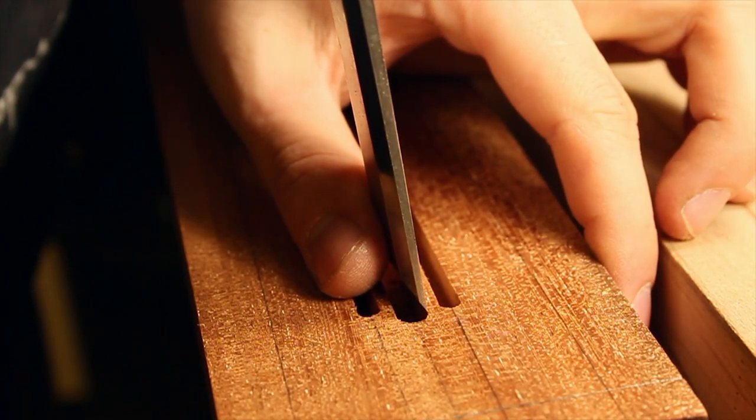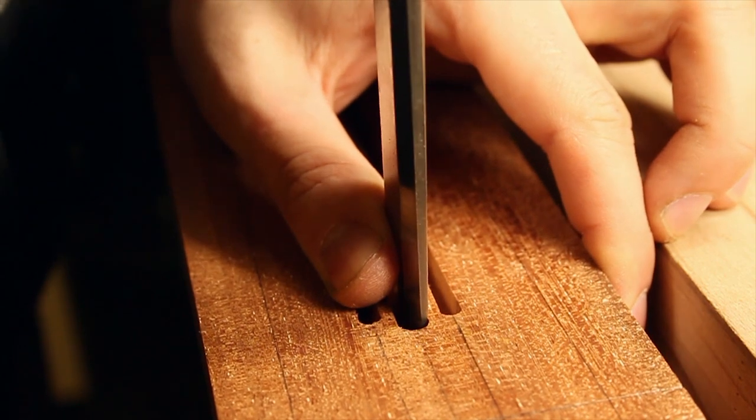The router leaves the slots rounded at the ends. With a 6mm chisel I am able to square them up for the truss rod.